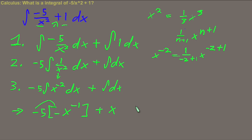Now we've got to multiply out this negative right here before we get to a final answer. So we have 5 over x plus x is the answer to that integral there.